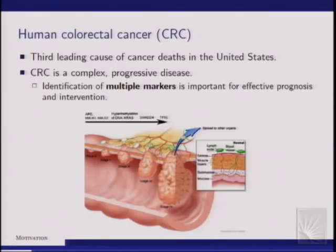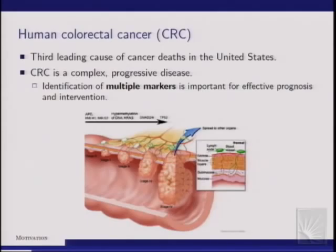I don't need to motivate why we are studying human colorectal cancer to this crowd, but I will mention that it is a complex and progressive disease. Single gene markers — genes that are dysregulated in tumorigenic or metastatic cell lines — are inadequate. We want to identify multiple markers and understand the interplay between those multiple markers so that we can do prognosis and therapeutic intervention.